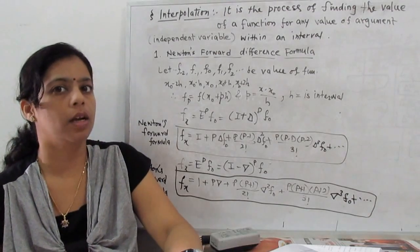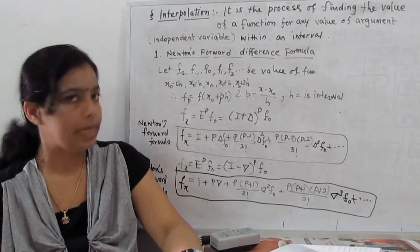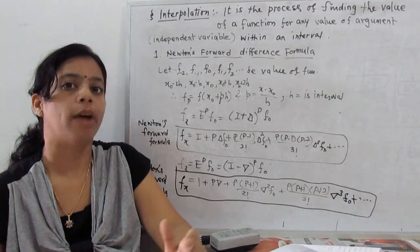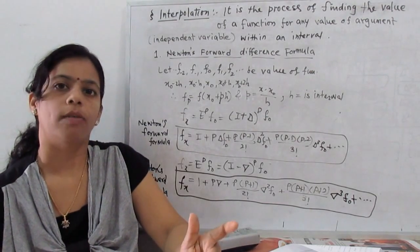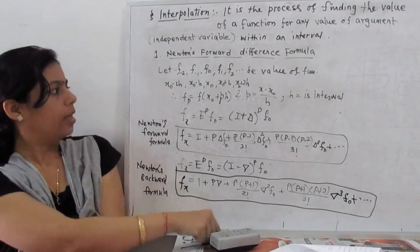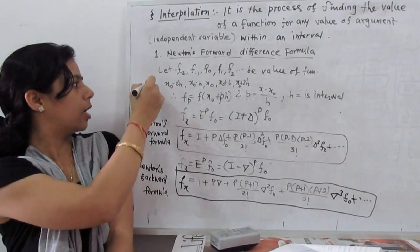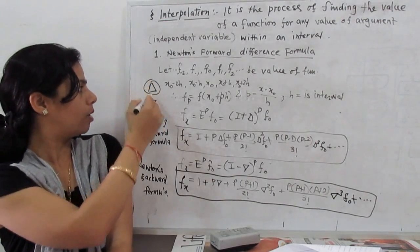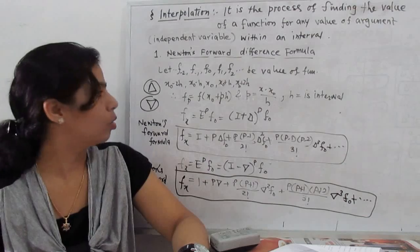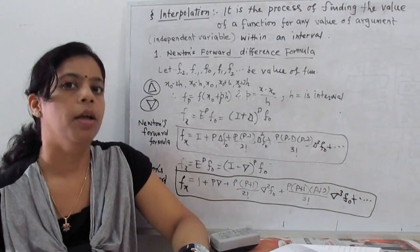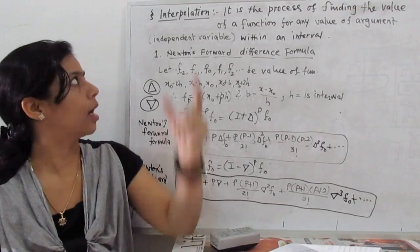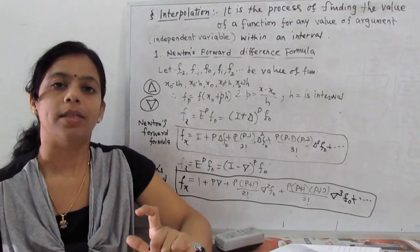Welcome to this new video. Today we learn about interpolation. Before interpolation, we already learned about finite difference operators like the Newton forward and Newton backward operators. The forward operator is denoted by the delta sign (Δ) and the backward operator by the reverse sign (∇). I already showed how to calculate these and how to make the table for forward and backward operators.